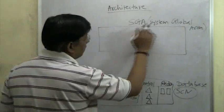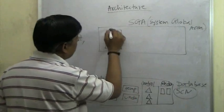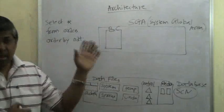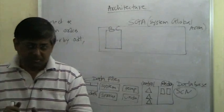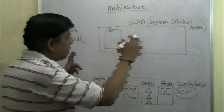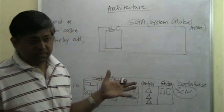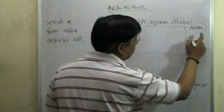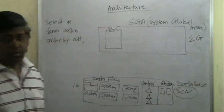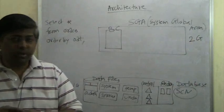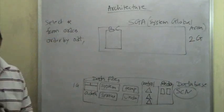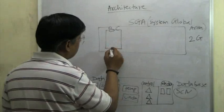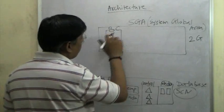Inside the SGA, there is a sub-area called the buffer cache — its full name is database buffer cache. This is a certain area within the SGA. Let us say the SGA of my Oracle database is 2 GB out of 4 GB total RAM. Within that 2 GB, a certain portion — say 500 MB — is allocated for the buffer cache.